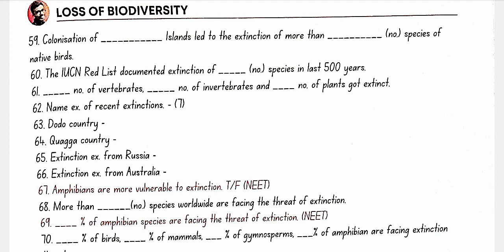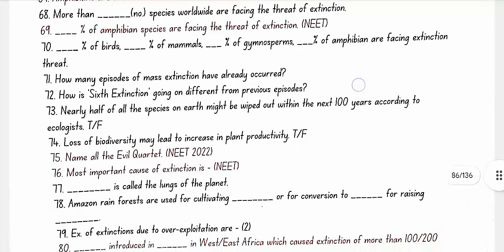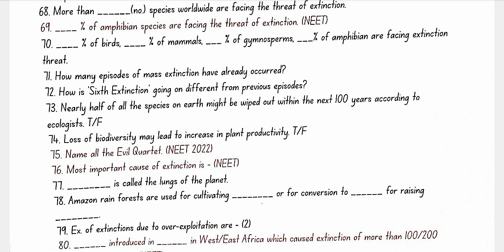More than 15,500 species worldwide are facing the threat of extinction. 32% of amphibian species, 12% of birds, 23% of mammals, 31% of gymnosperms, and 32% of amphibians face extinction threats. Five episodes of mass extinction have already occurred; the sixth extinction is ongoing at a rate 1,02,000 times faster than previous episodes. Nearly half of all species on Earth might be wiped out within the next 100 years.